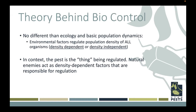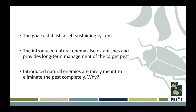The theory behind biological control is no different than basic ecology and population dynamics. Environmental factors are going to regulate population density of all living organisms. Essentially, the pest is the thing being regulated by that biological control agent or natural enemy. The population of natural enemies is going to be dependent on the population of pest organisms and vice versa. If there are more natural enemies present, the number of pest insects is going to be lower. If the pest population is higher, that's going to be more food and resources for that natural enemy.